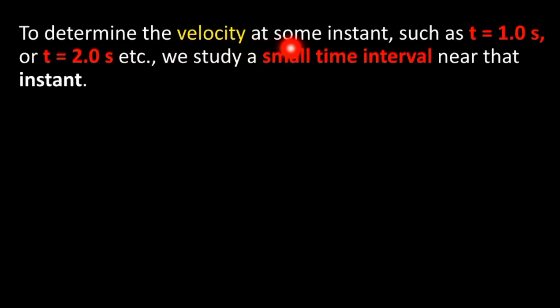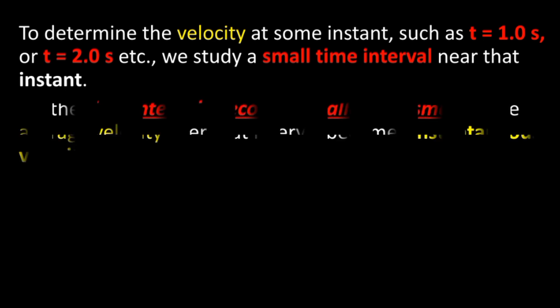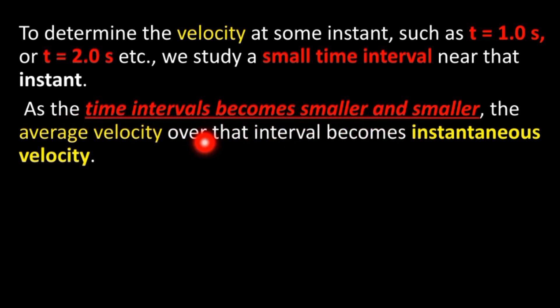To determine the velocity at some instant, such as time equal to 1 second or time equal to 2 seconds, we study small time intervals near that instant. As the time intervals become smaller and smaller, the average velocity over those intervals becomes the instantaneous velocity.